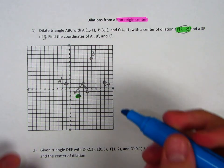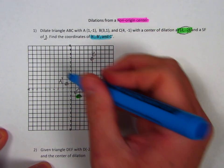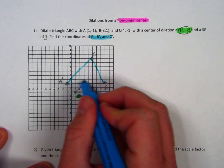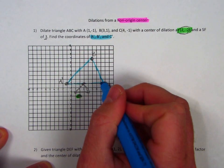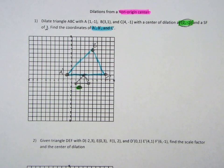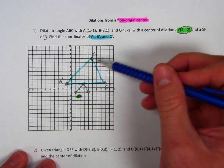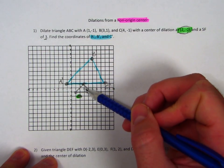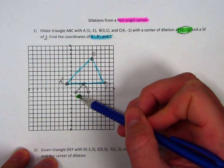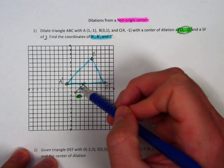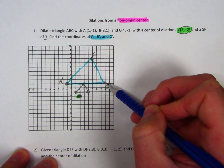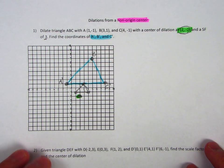So my new figure — A prime, B prime, C prime — is going to be this figure right here. Just like any dilation, my image should be similar to my pre-image, meaning it's the same shape but a different size. Remember, we can't just multiply each of these coordinates by three. I have to actually count up and over on the graph because we're dilating from a point other than the origin.